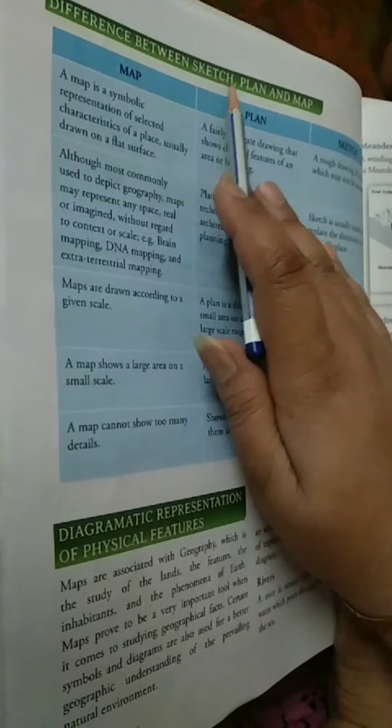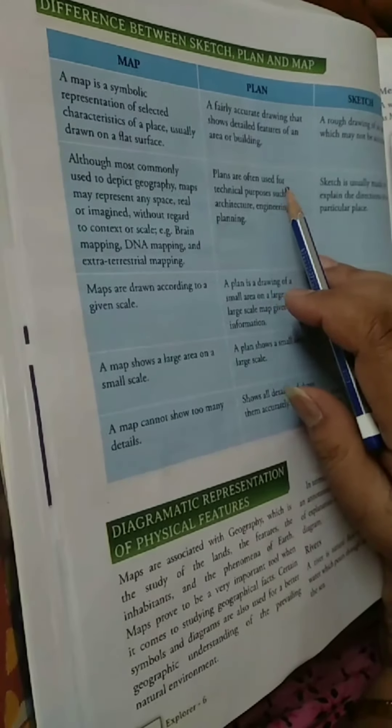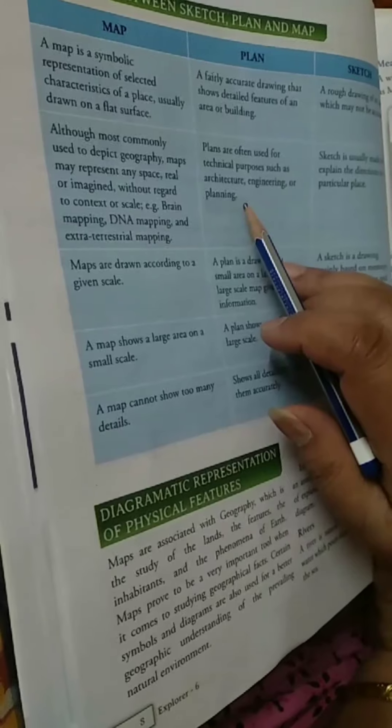J1: When are plans used? Come to page number eight. In the box with the heading 'Difference Between Sketch, Plan and Map,' see the second point under Plan: plans are often used for technical purposes such as architecture, engineering, or planning.